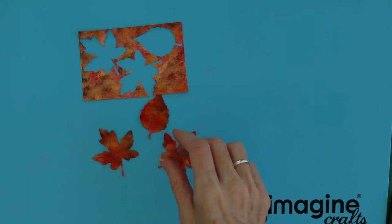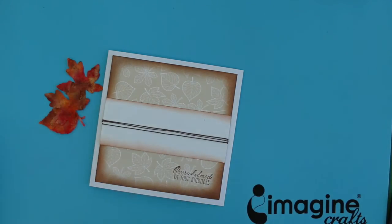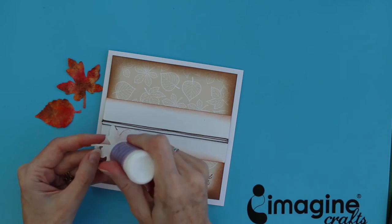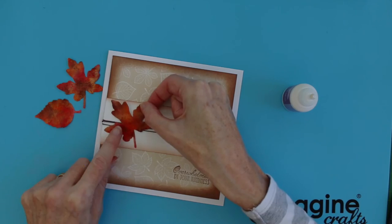Now you can cut out some leaves from the panel and assemble onto your card base.